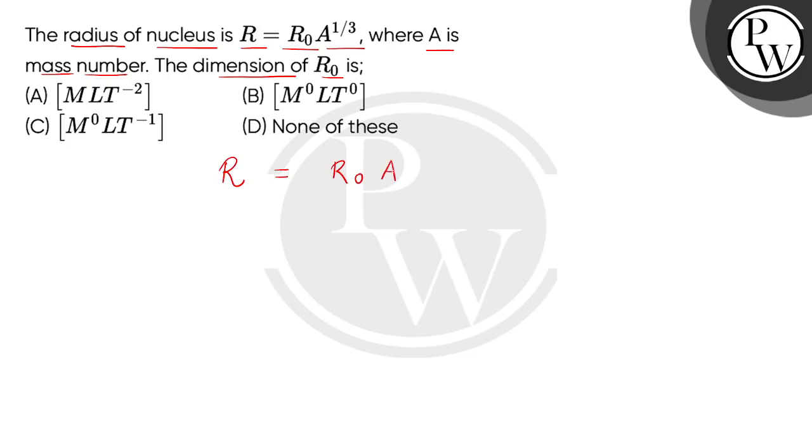Where it's mentioned that A is a quantity which represents mass number. Now if we go into detailed description of mass number, this is the number of nucleons in the nucleus.